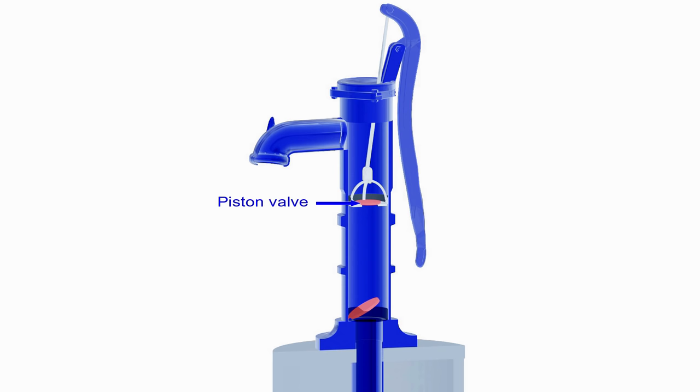Another non-return valve is fitted at the base of the cylinder. A pipe is connected to the cylinder, which is submerged in water. An outlet is fitted through which water flows out of the pump.